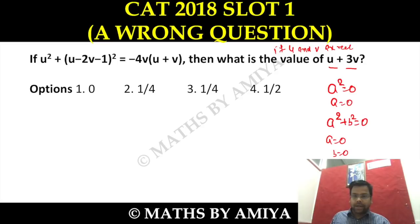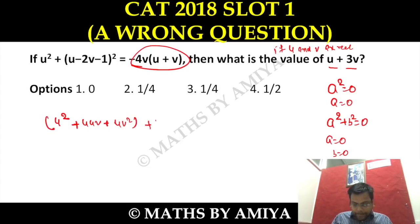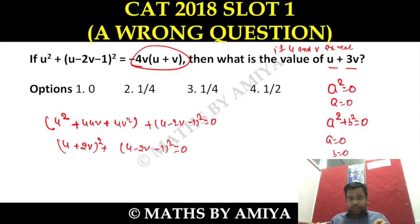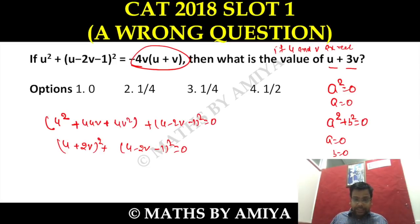Please drop this question on ethical grounds. Taking values from the RHS to the LHS, we get: u² + 4uv + 4v² in one bracket, plus (u − 2v − 1)² = 0. The first bracket is clearly u + 2v, whole squared, plus (u − 2v − 1)² = 0. With the assumption that a² + b² = 0 means a = 0 and b = 0 — which is only valid if u and v are real — this is still a pre-assumption that is wrong unless the word 'real' is specified.